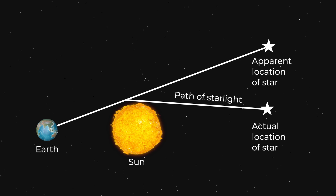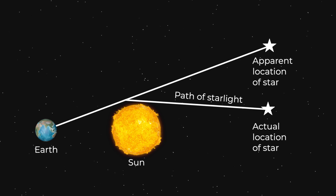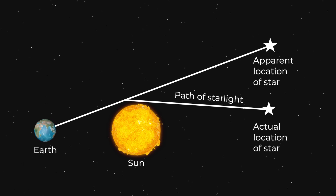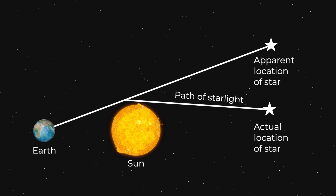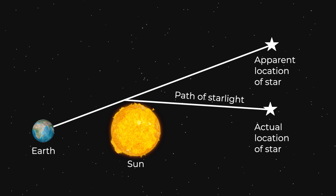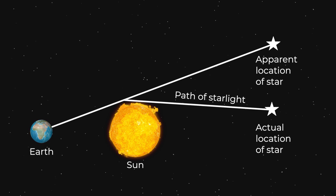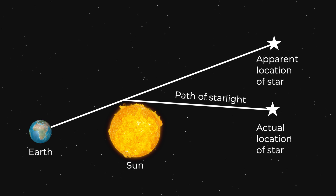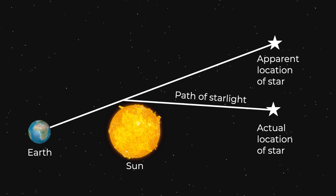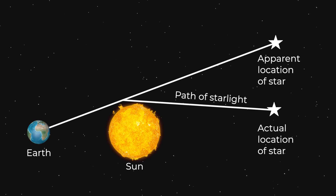The first impactful test of general relativity occurred in 1919 and demonstrated the ability of the sun to bend the passage of light. Sir Arthur Eddington took advantage of a solar eclipse to block the light from the sun. With the sun blocked out, he could see the stars behind it. He knew where those stars should be if relativity was or was not correct, and he saw them where they would be if Einstein was right.